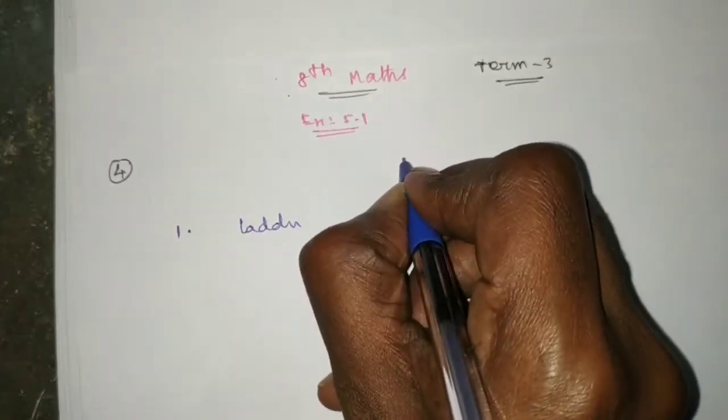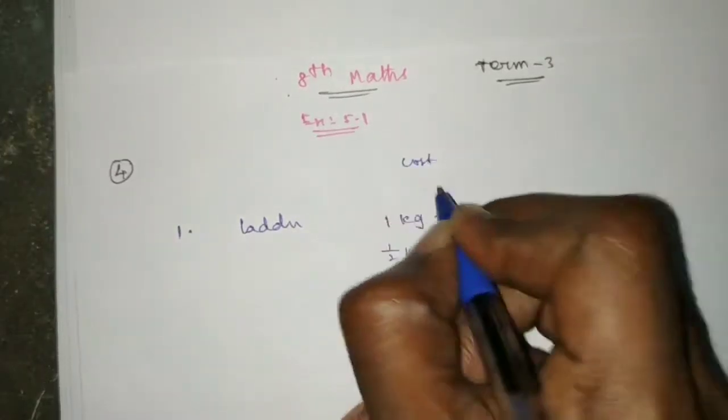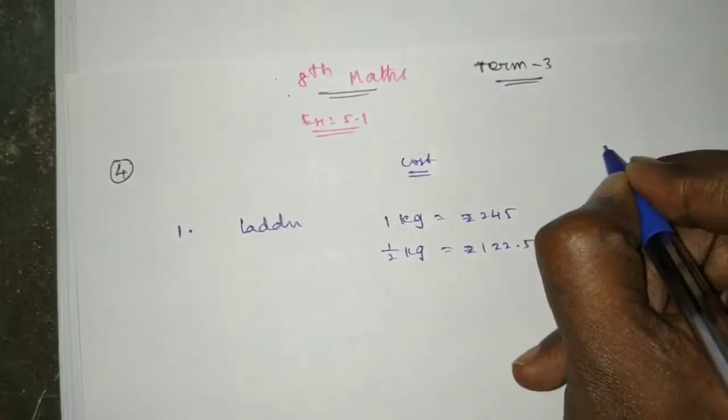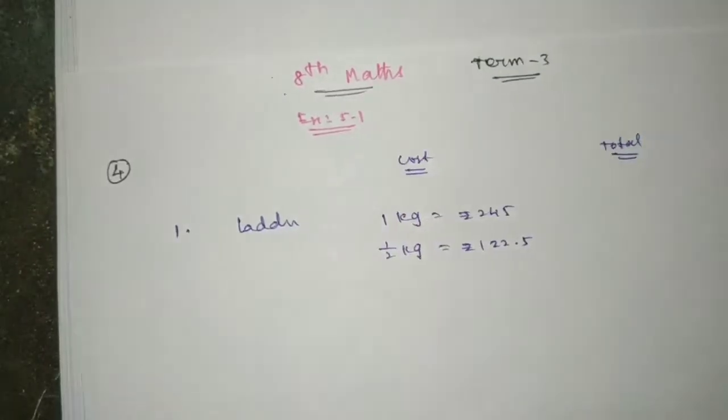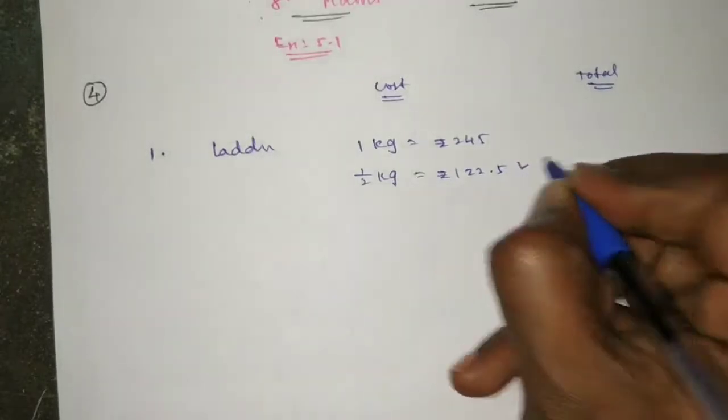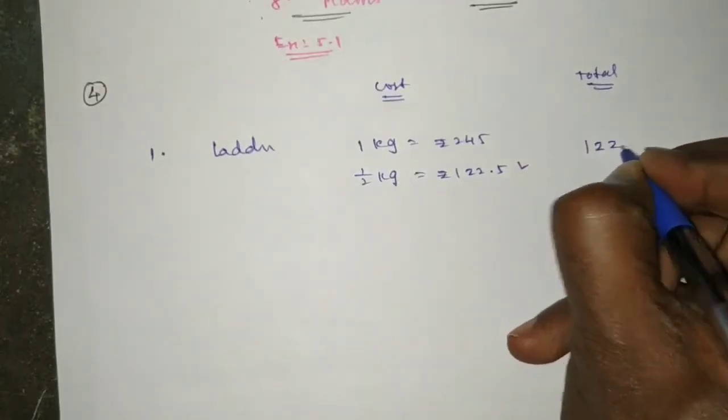So here, the cost of half cage laddu is 122.50 rupees.